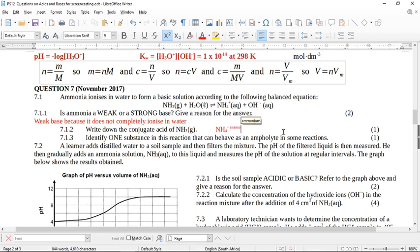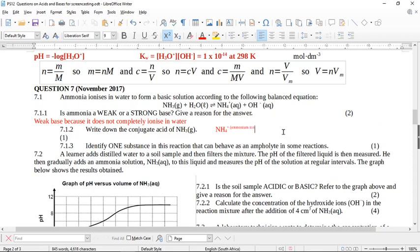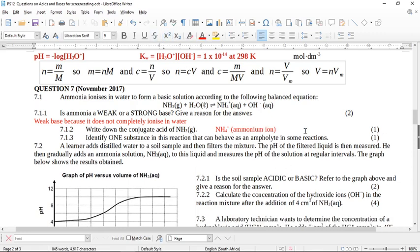So ammonia plus a proton gives you the ammonium ion, okay? So this, the ammonium ion. Okay, I'm not sure if it wants the formula or the proper name, but we can write both because we are clever and we know them both.